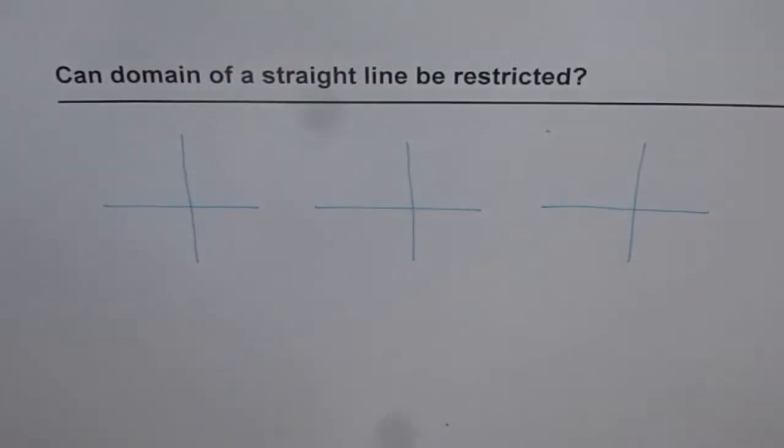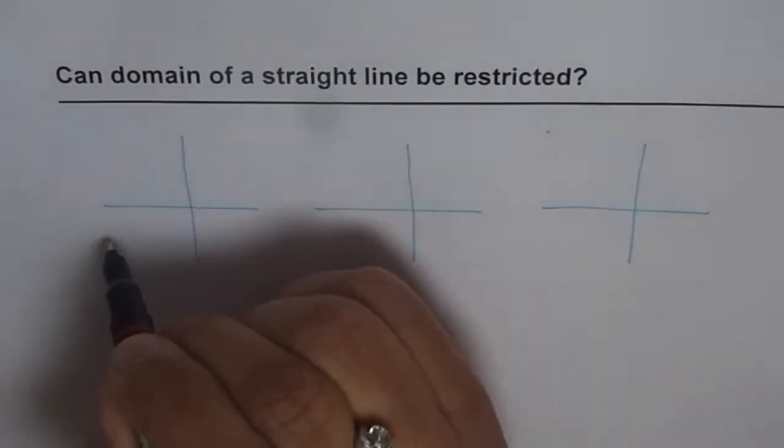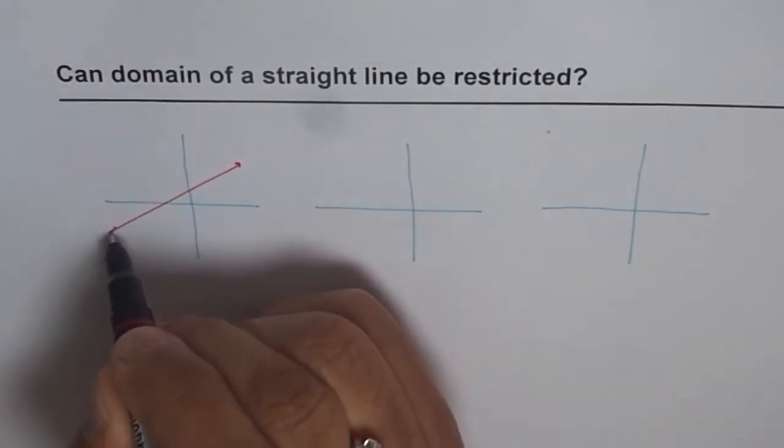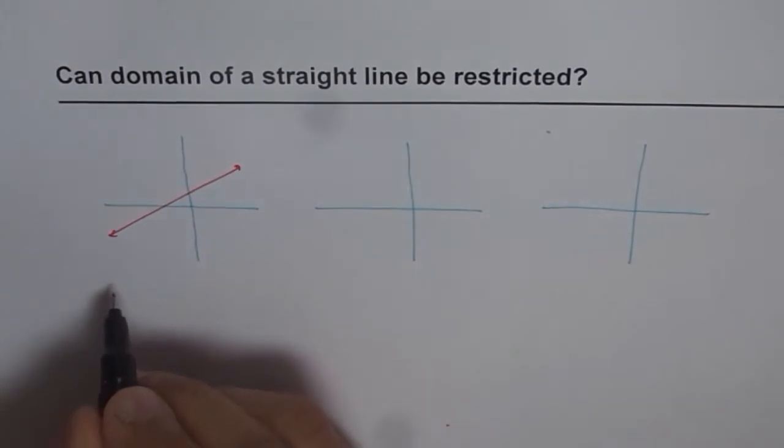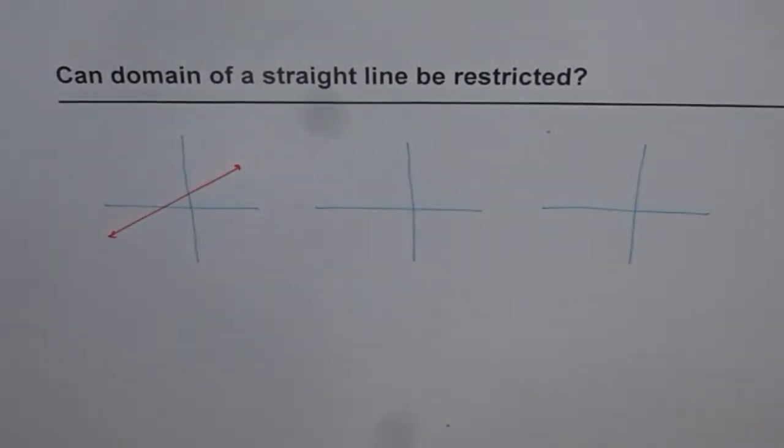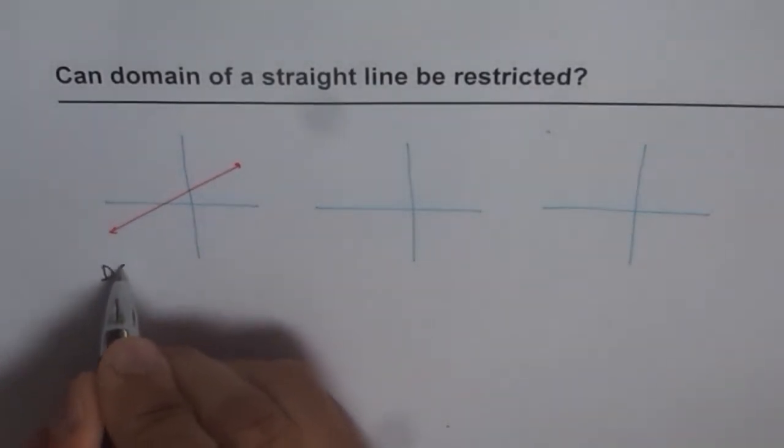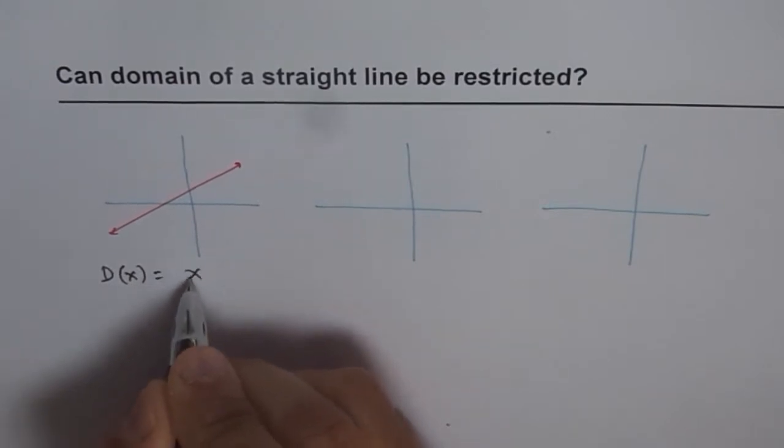So we could have a straight line which is kind of going like this, so that is with a positive slope. Now in this case domain is all real numbers, right? So here domain is x belongs to real numbers.